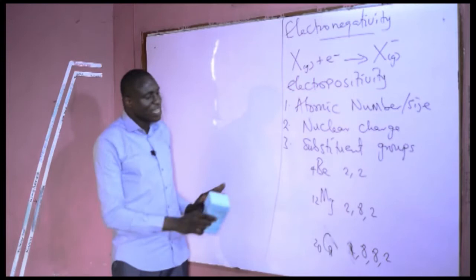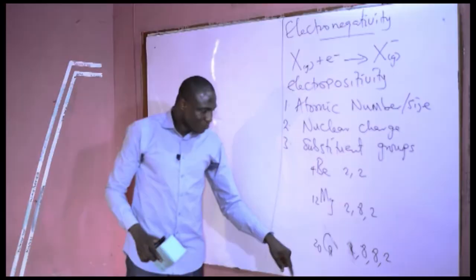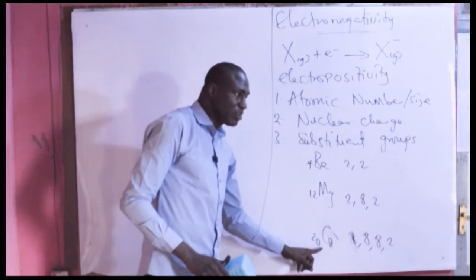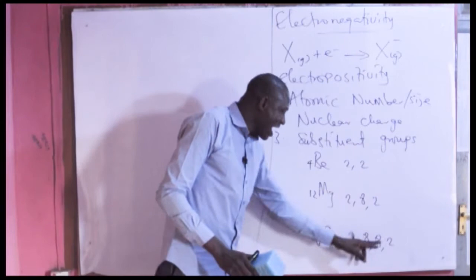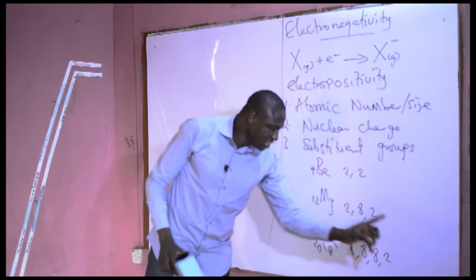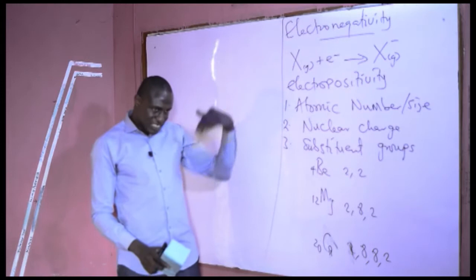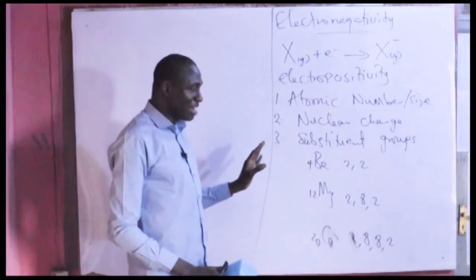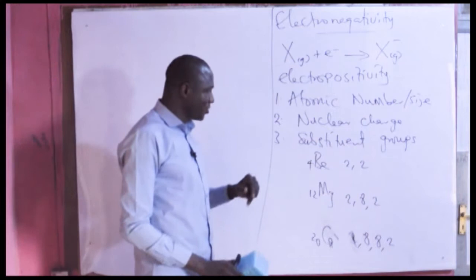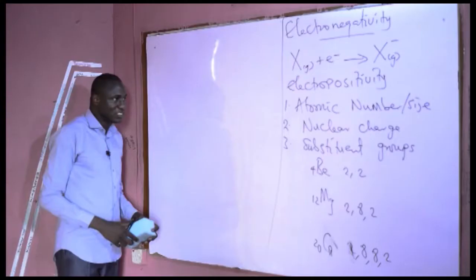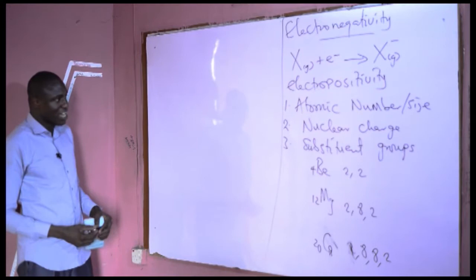That is how the size of the atom affects electronegativity. On the other hand, calcium is more electropositive than magnesium because the valence electron to be released is further from the nucleus, reducing the nuclear force holding it. It is much easier for calcium to lose electrons than magnesium. So as you go from top to bottom down the group, electropositivity increases but electronegativity decreases. That is why metals have the least electronegativity value in any period, and the highest electropositivity value, due to their ability to easily release bonding electrons.